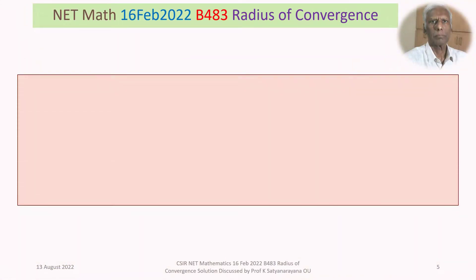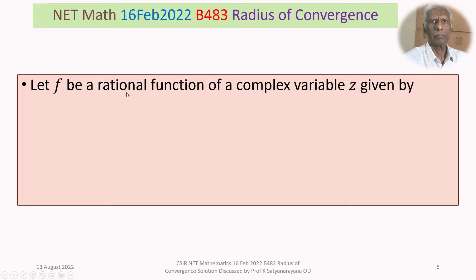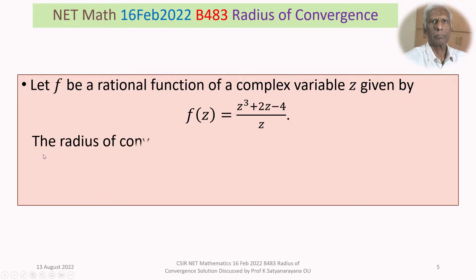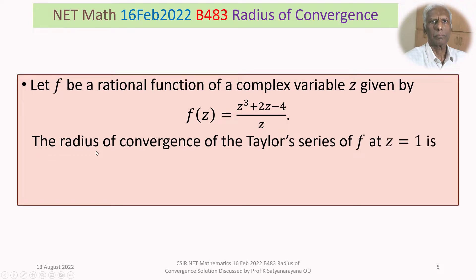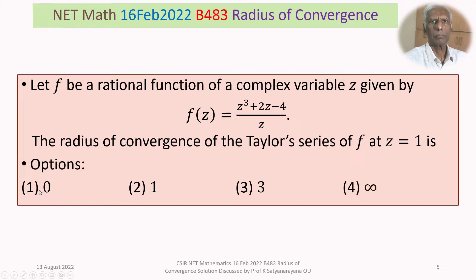The problem is: let f be a rational function of a complex variable z given by f(z) = (z³ + 2z − 4) / z. The radius of convergence of the Taylor series of f at z = 1 is — we are given 4 options. Option 1: 0. Option 2: 1.